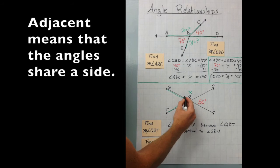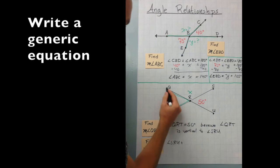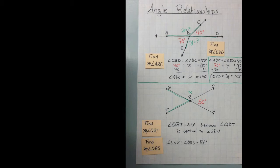So we can just do this. Angle SRU plus angle QRS equals 180 degrees. Because they're adjacent and supplementary. They form a straight line.